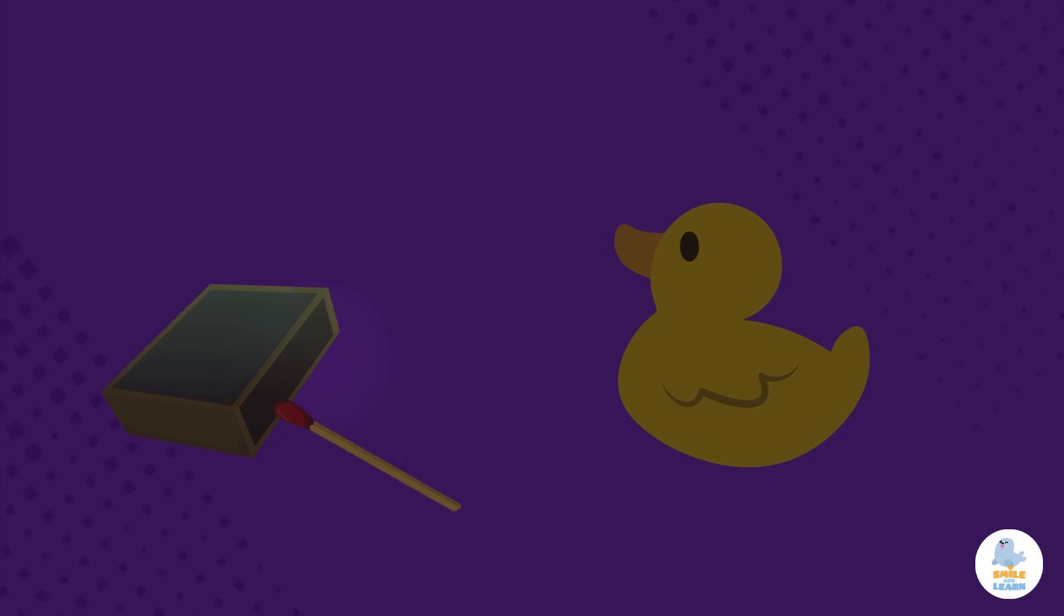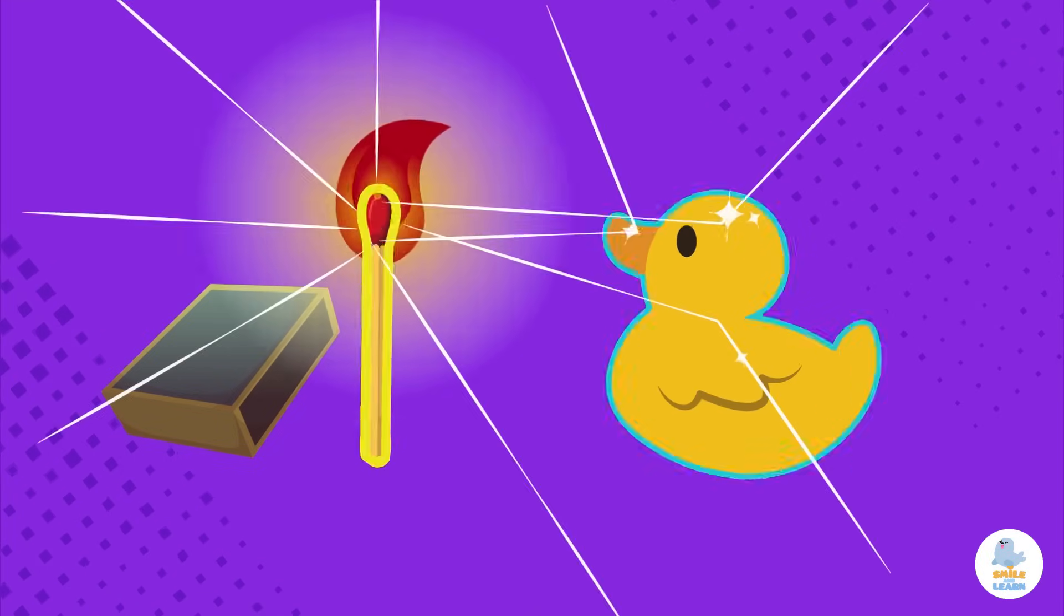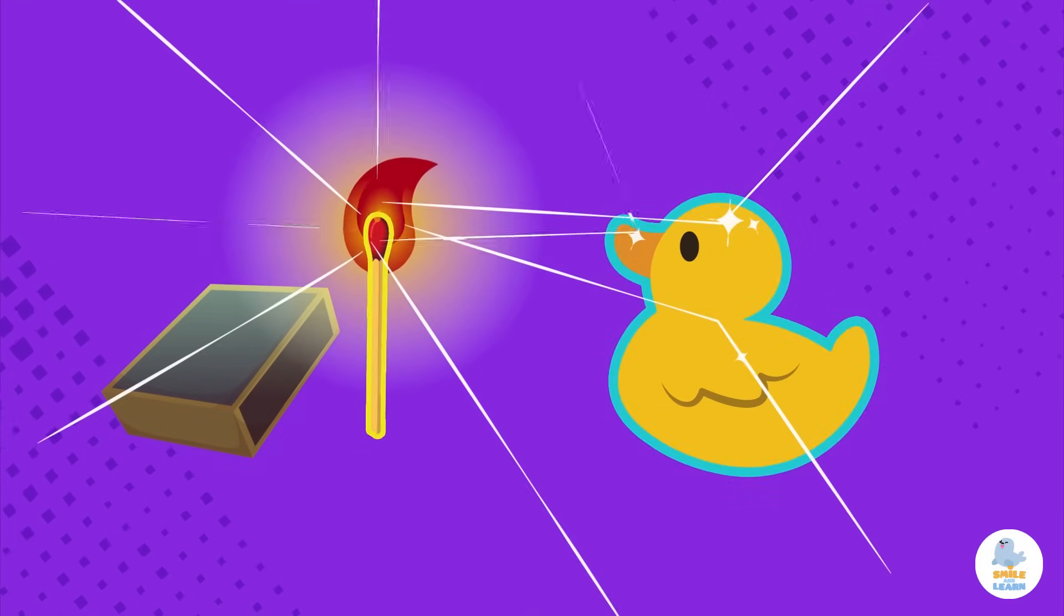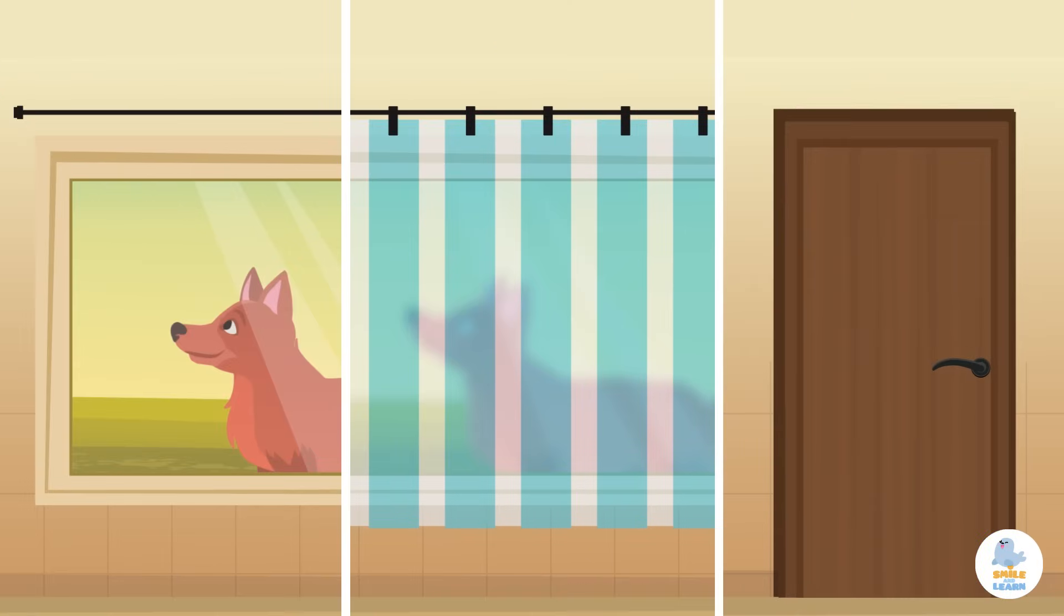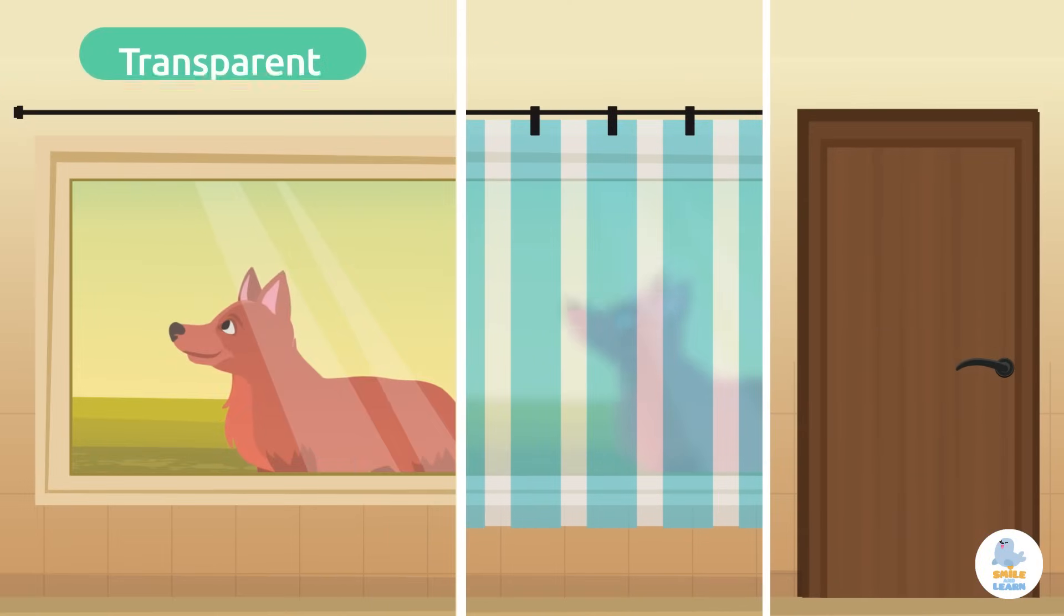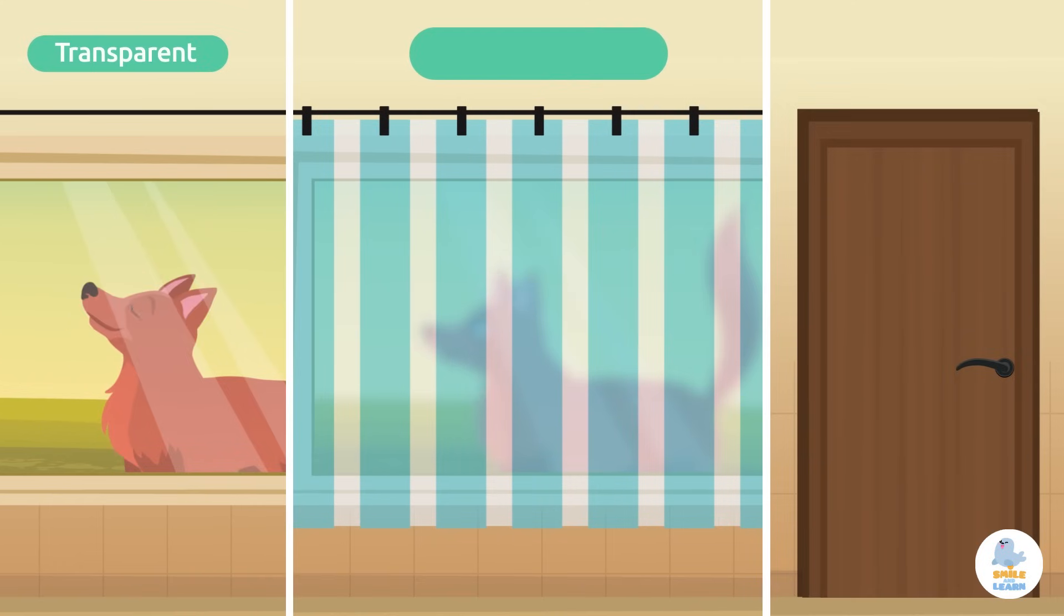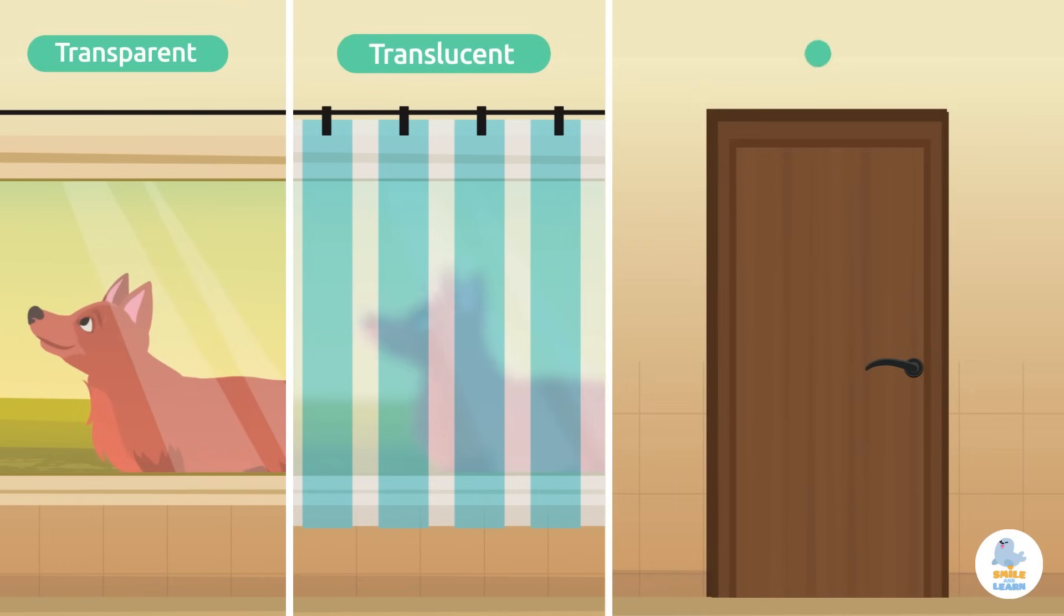We can both see objects that emit light and those that reflect it. Each object is composed of different materials that behave differently with light and these can be transparent, translucent, and opaque.